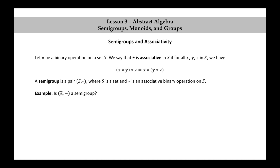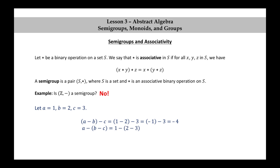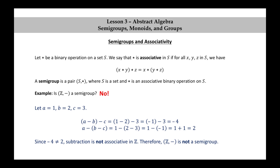Another example: is Z together with subtraction a semigroup? The answer is no. Let's look at a counterexample. If A equals 1, B equals 2, and C equals 3, then (A minus B) minus C is (1 minus 2) minus 3, which is negative 1 minus 3, equal to negative 4. However, A minus (B minus C) equals 1 minus (2 minus 3), which is 1 minus negative 1, or 1 plus 1, which is 2. Since negative 4 is not equal to 2, subtraction is not associative in Z. Therefore, Z minus is not a semigroup.